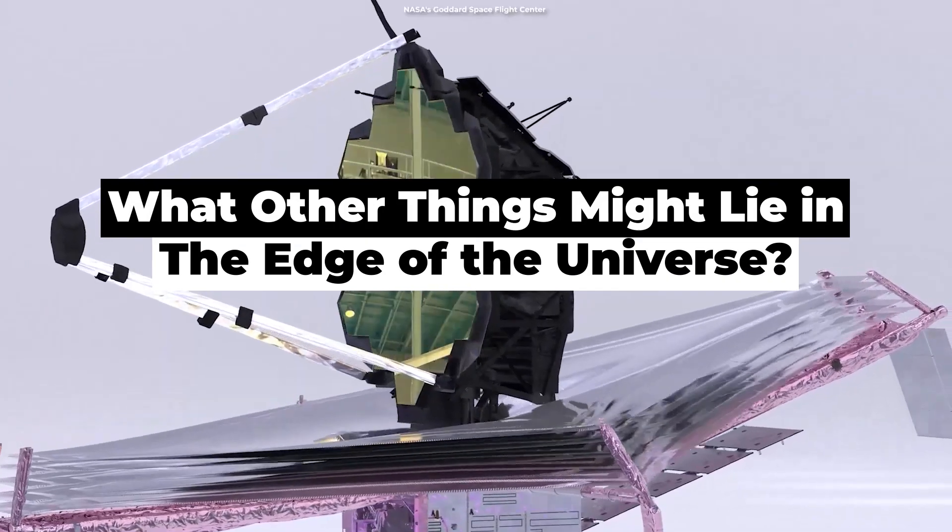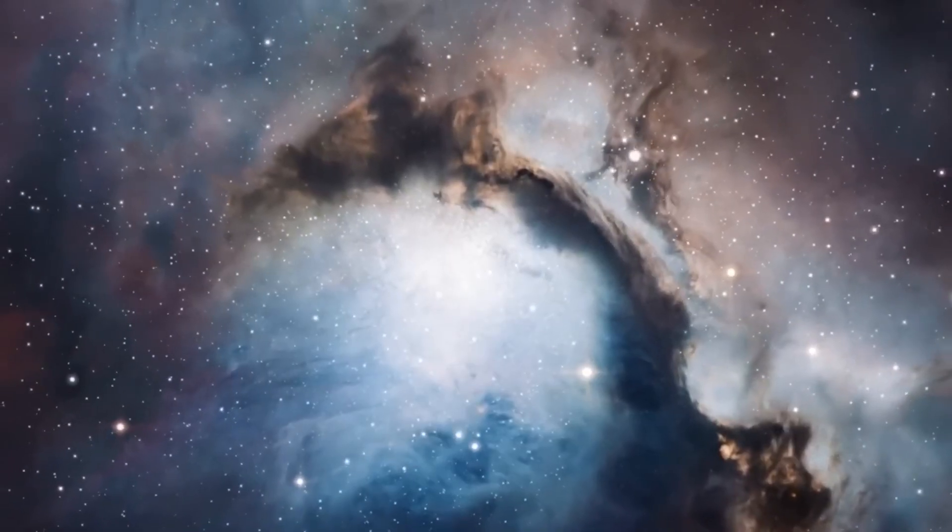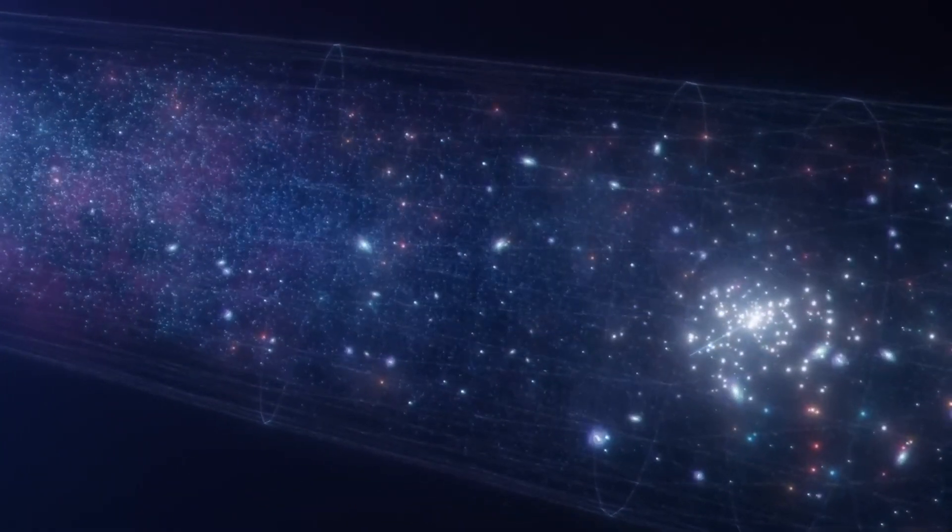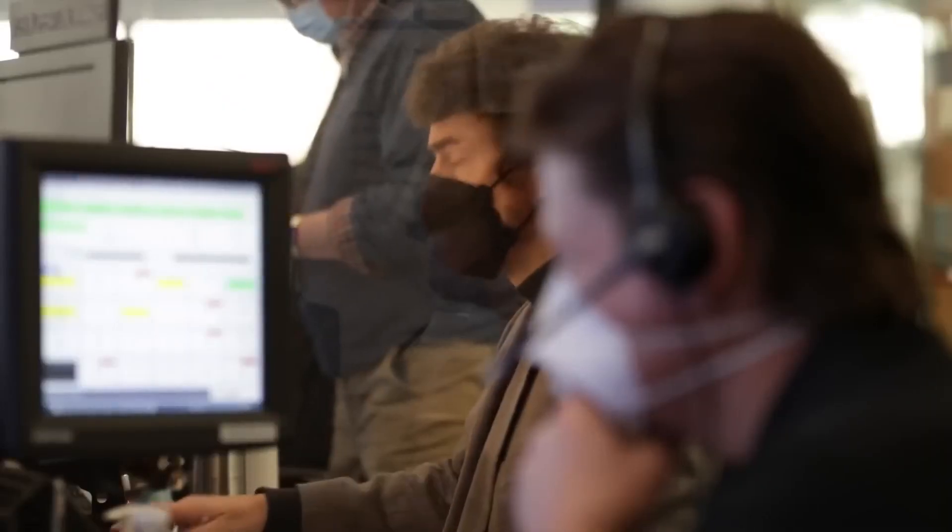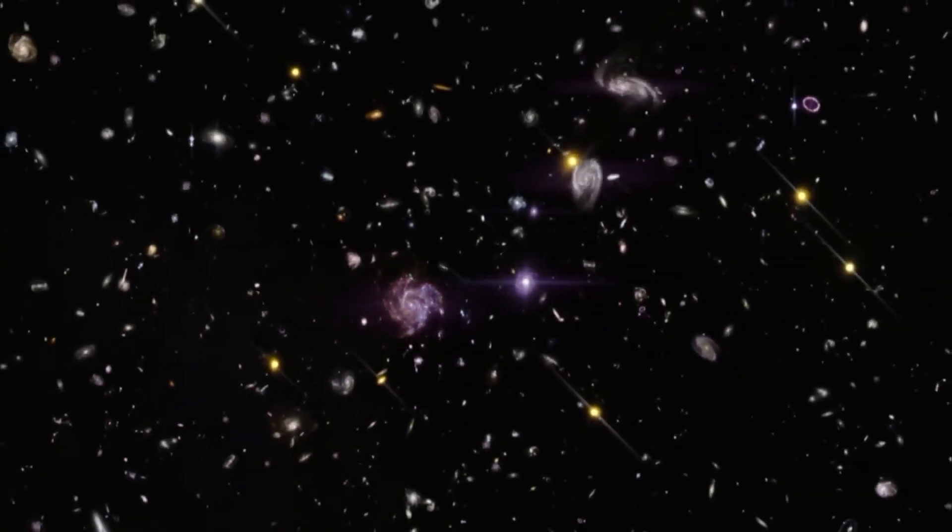Despite JWST being the most powerful telescope ever made, the amount of information it can gather by peering into the edge of the universe can be pretty limited. There is still a myriad of things we don't know about the universe. Is there really an edge? Is the universe actually infinite? Or does it even stop at some point out there?